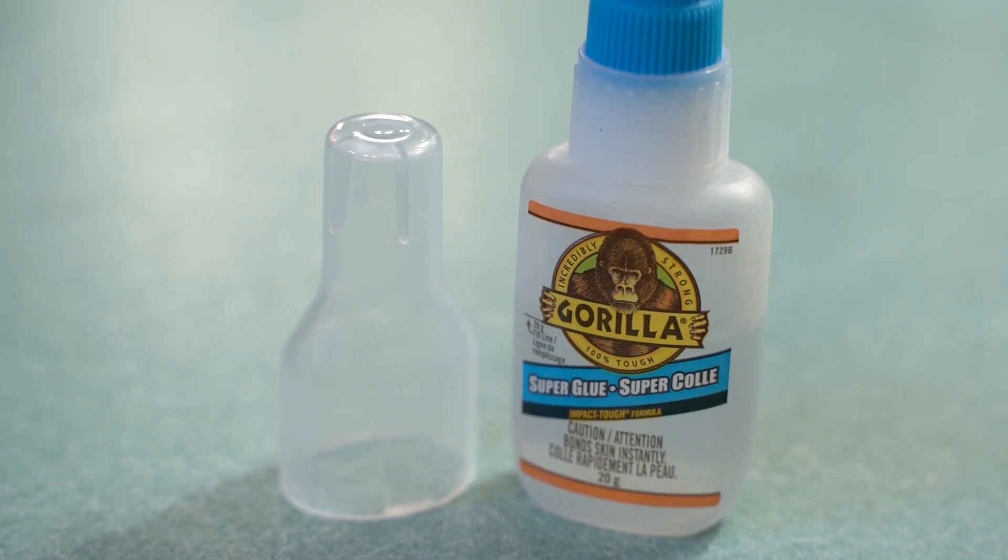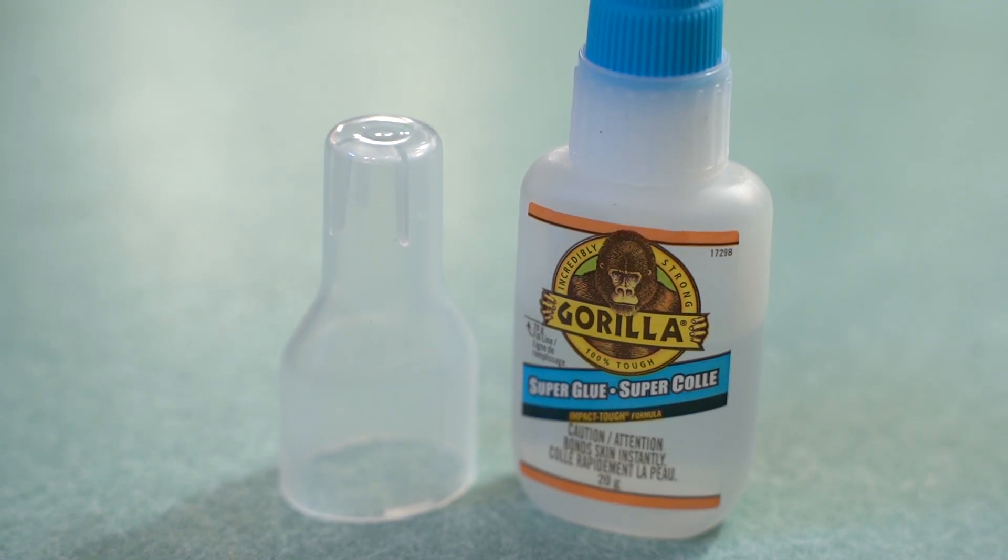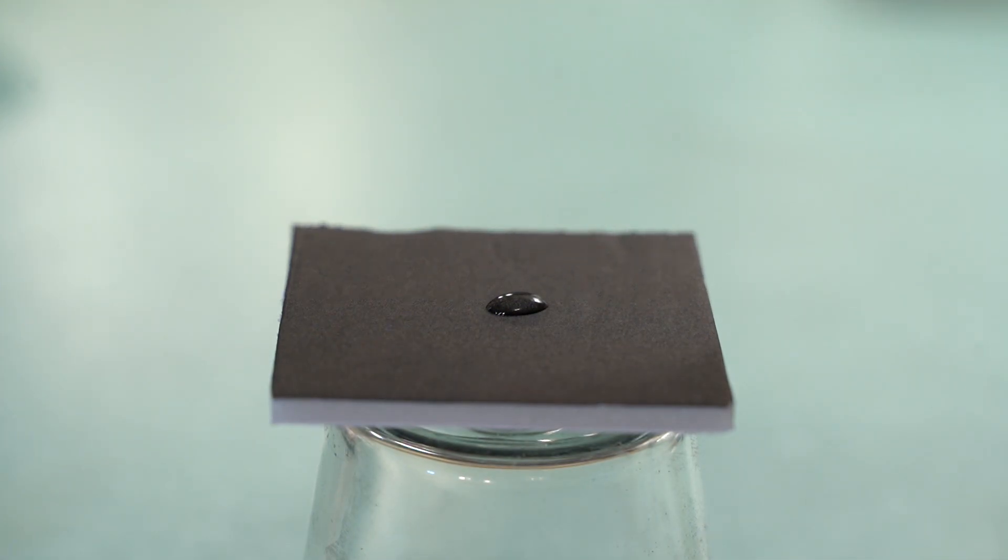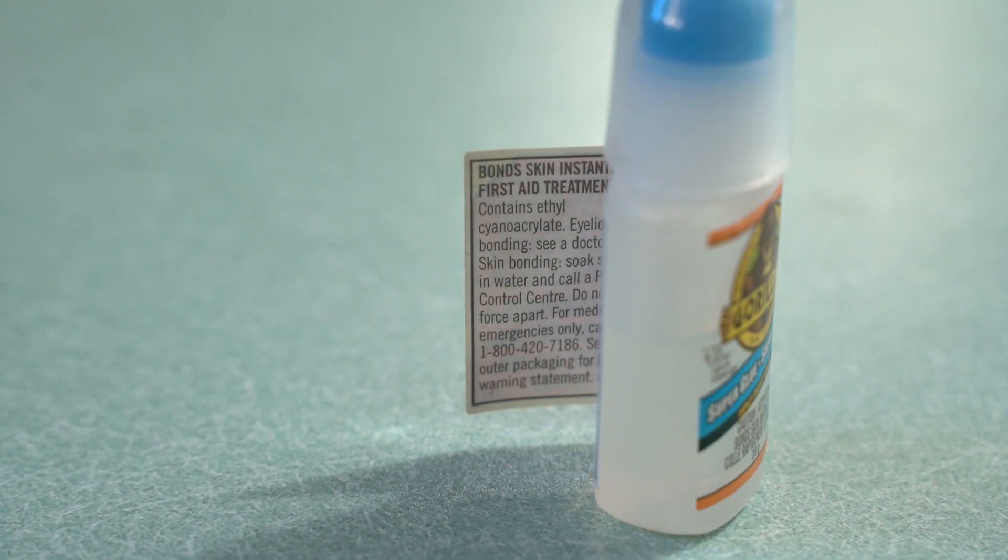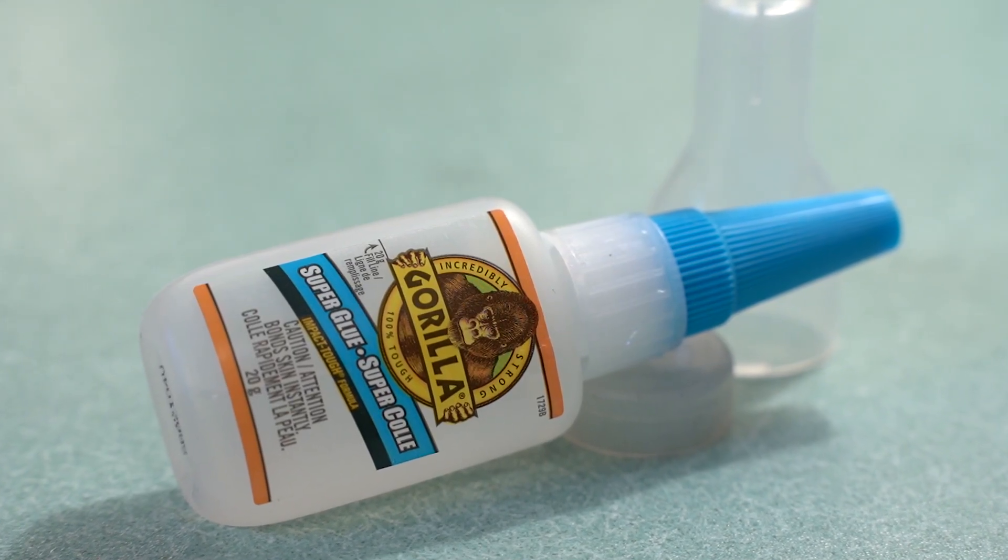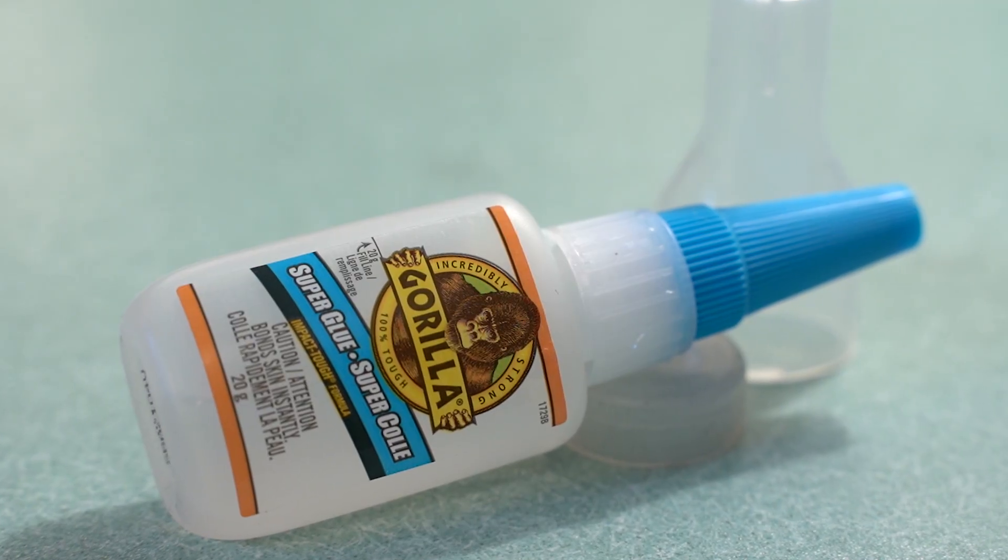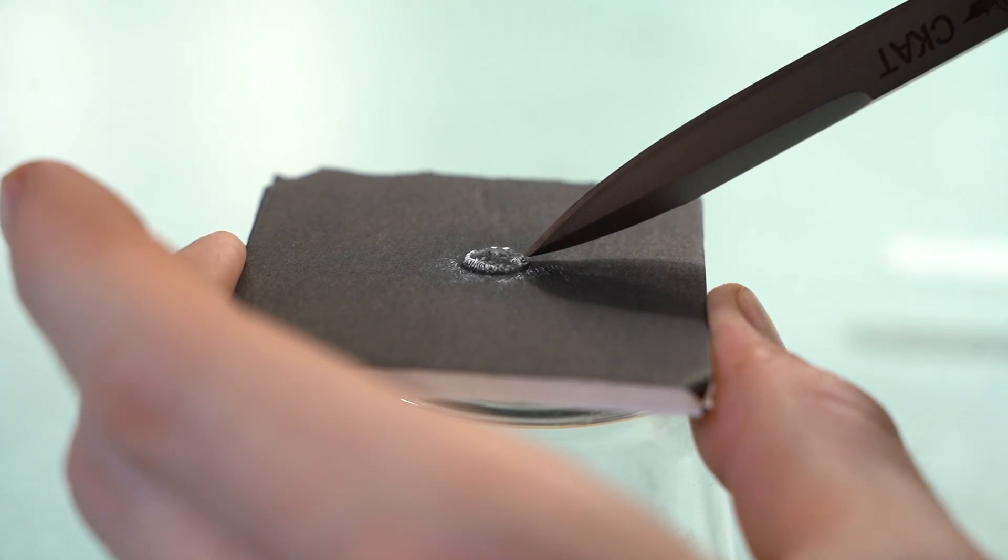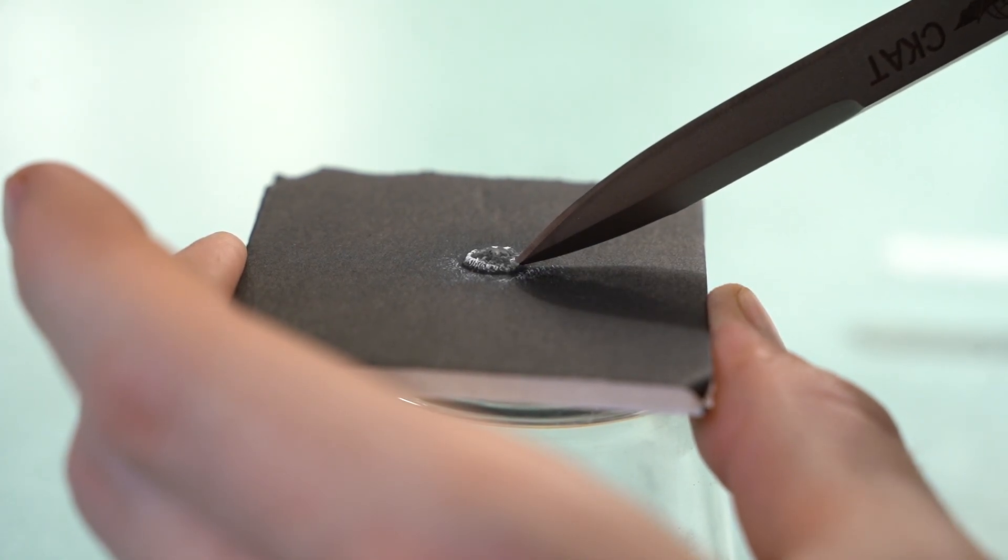Cyanoacrylate adhesives are monomeric adhesives and generally set quickly to clear, hard, glassy resins. Polymers of alkyl-2-cyanoacrylates are also known as superglues. Alkyl-2-cyanoacrylate is an acrylate ester which has a triple bonded carbon-nitrogen, cyano or nitrile group bonded within an ester.